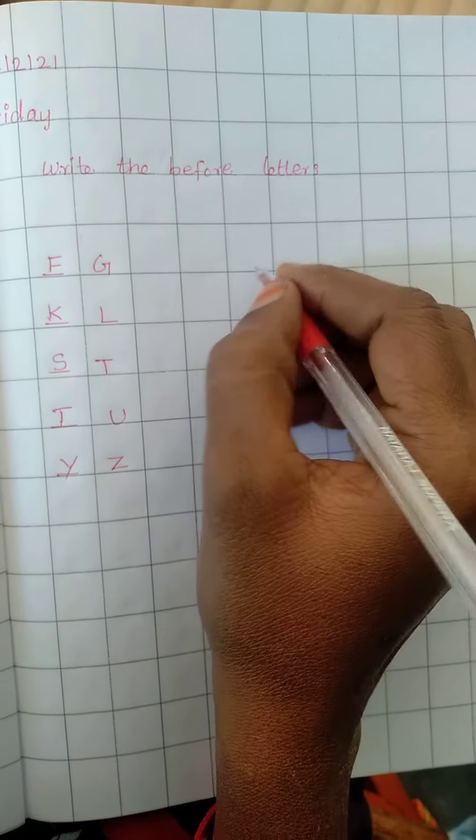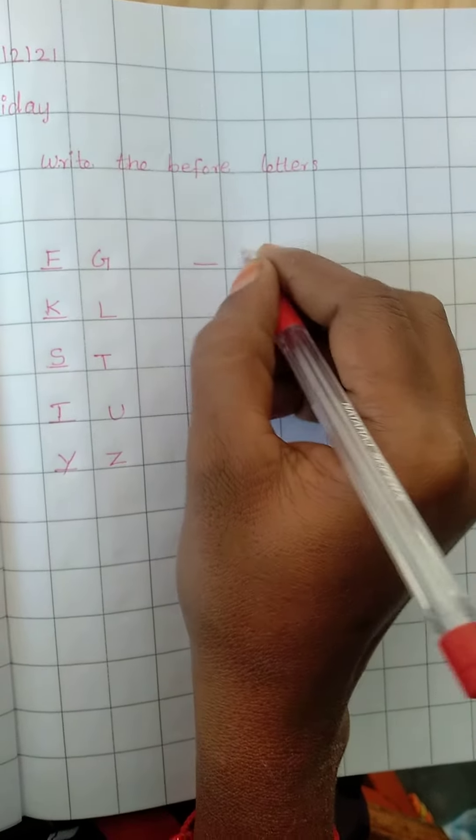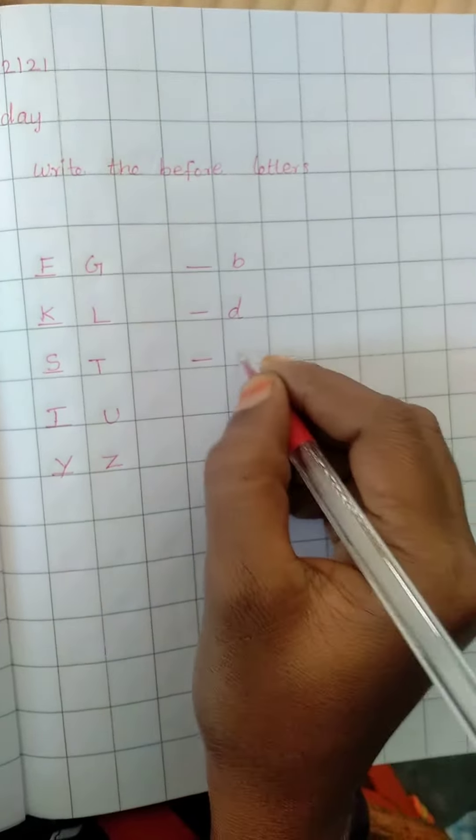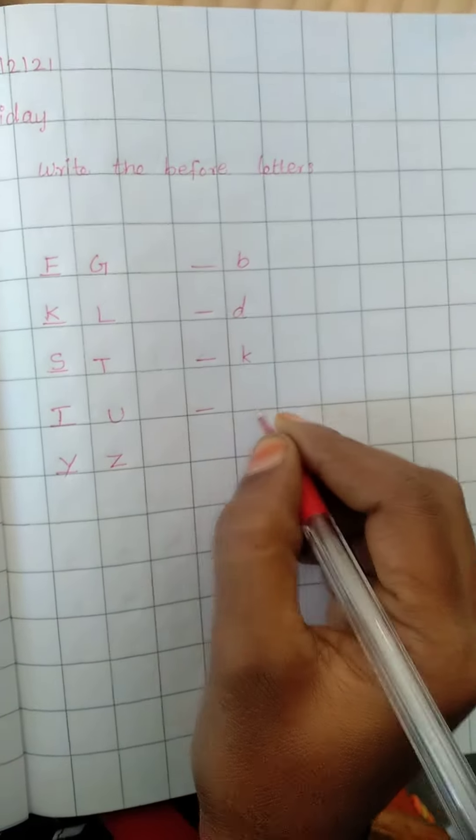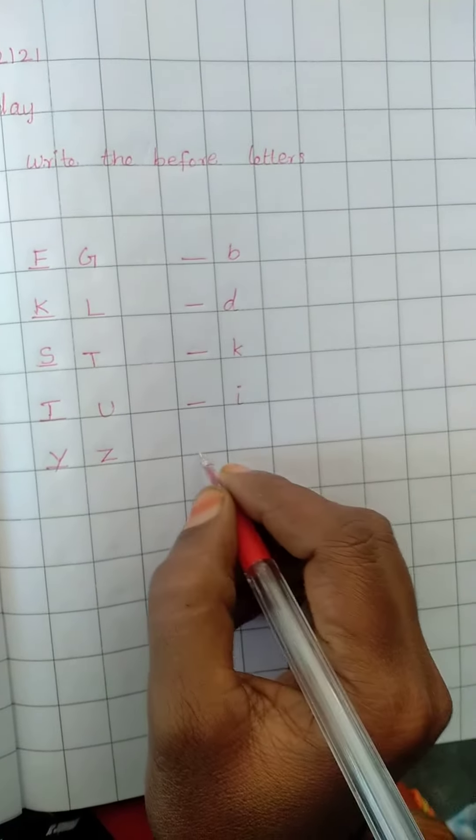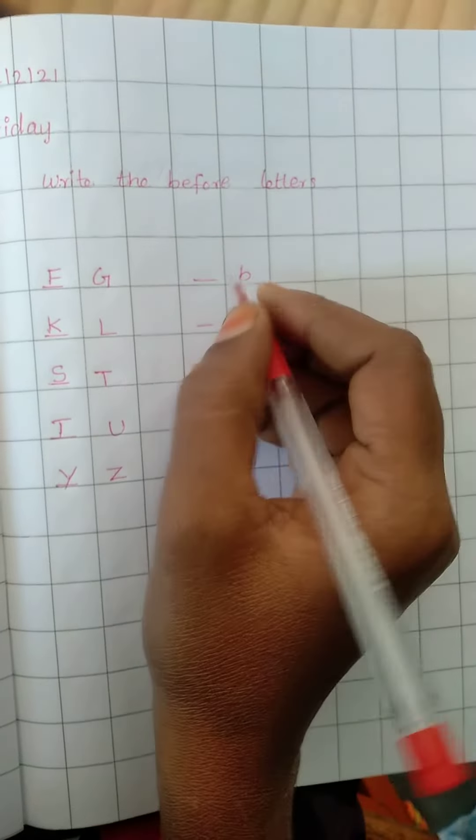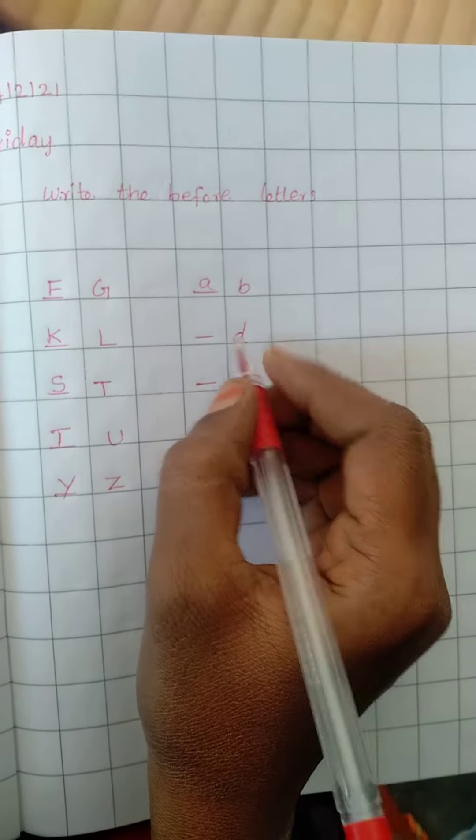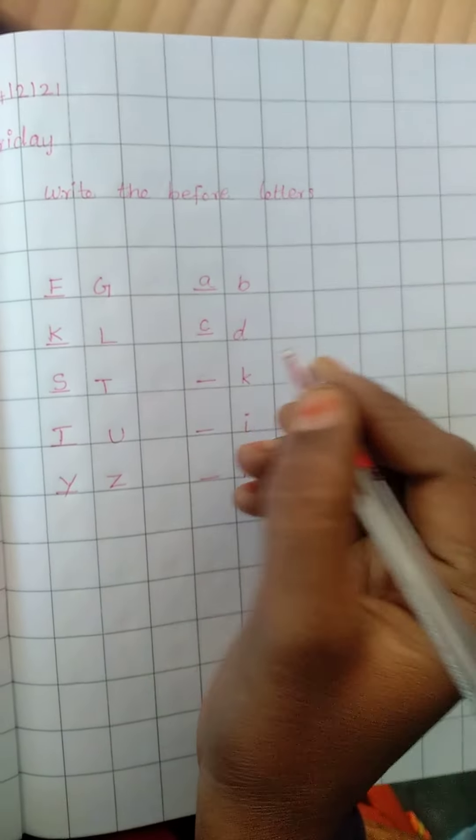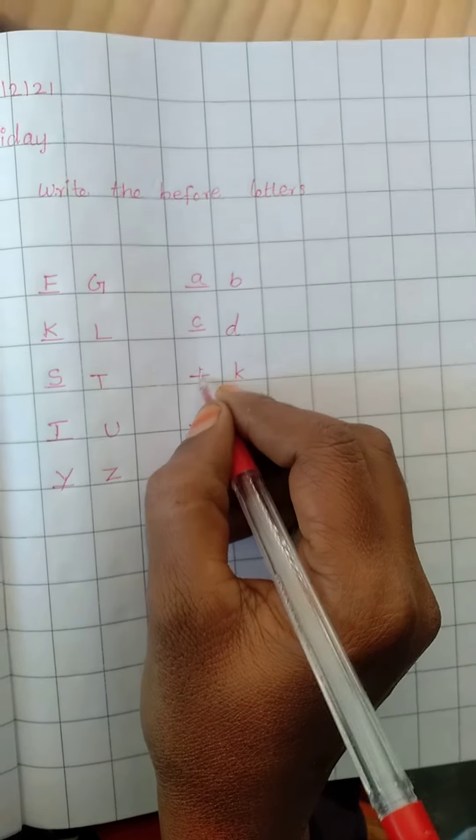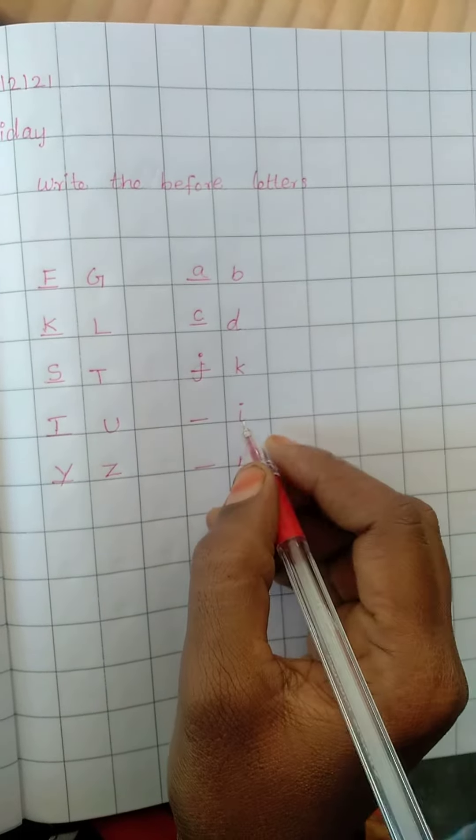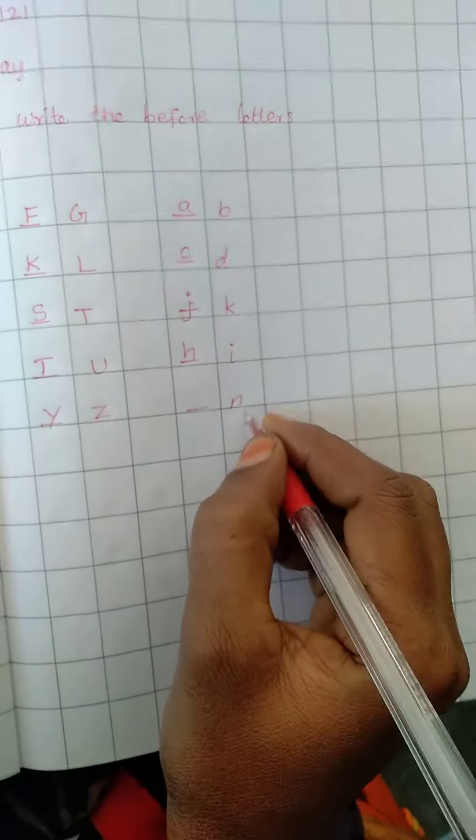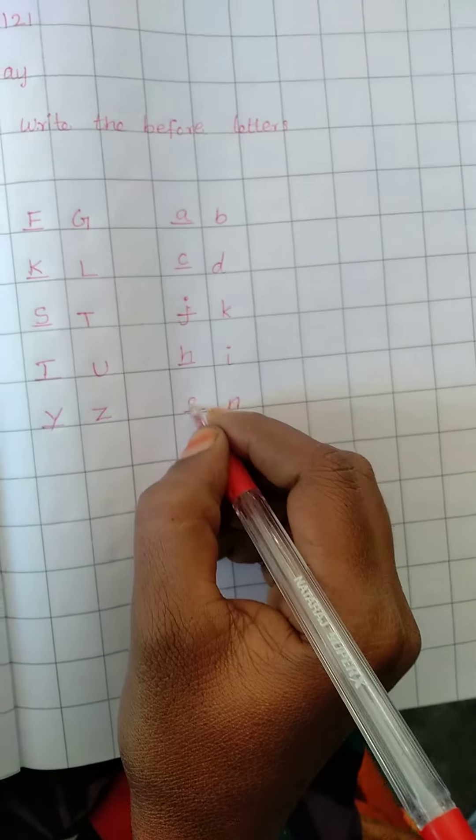Next, small letters. B before letter: A. D before letter: C. K before letter: J. I before letter: H. N before letter: M. Okay.